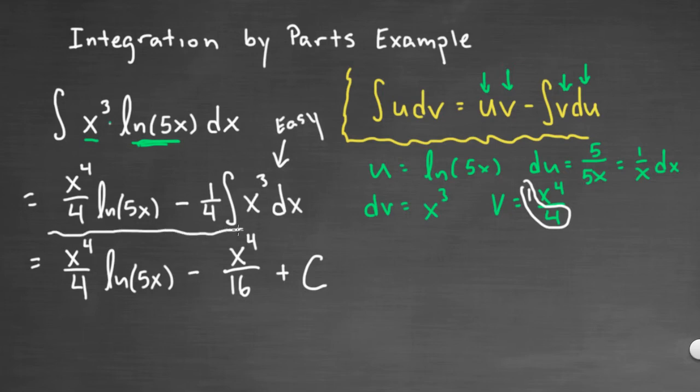So here's our indefinite integral answer, and again we got this by integration by parts, noticing that this was a product, wisely picking u and dv, and just basically plugging it in the formula.